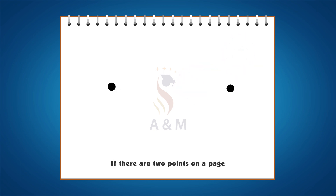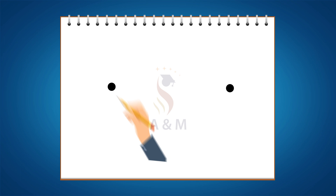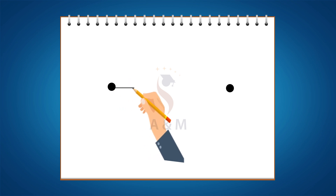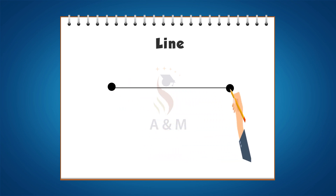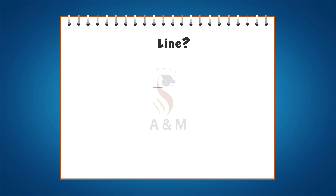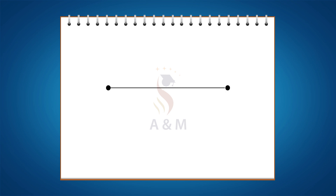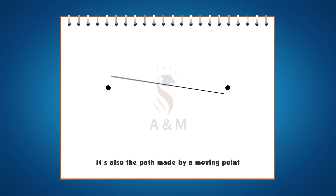If there are two points on a page, immediately the eye will make a connection and we will see a line. What is a line? A line connects two points. It's also the path made by a moving point.